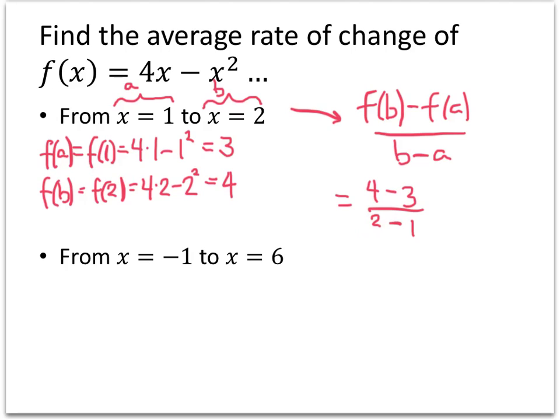So as long as I keep that order the same, I'll be in good shape. On the top I have 4 minus 3, that's 1. On the bottom I have 2 minus 1, that's 1. 1 divided by 1 is 1, and that's my answer. Now let's do the second one — the average rate of change from x equals negative 1, which I'll call a, to x equals 6, which I'll call b.